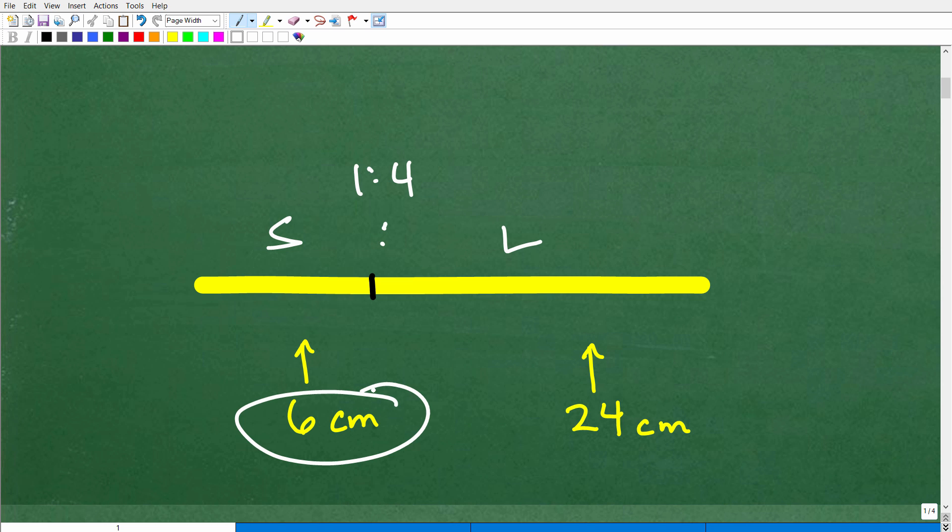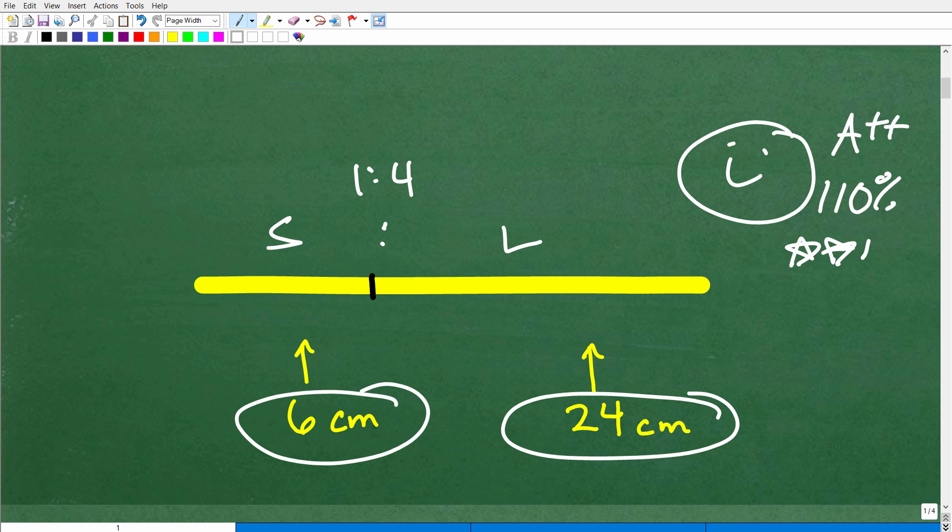The small part is 6 centimeters, and the larger part is 24 centimeters. So how did you do? Well, if you got this right, I must go ahead and give you a nice little happy face and A++. Matter of fact, we'll give you more than 100%. I'm going to give you 110% and a few stars because you were so awesome in mathematics. Okay, so nice job, but how did you get this answer?